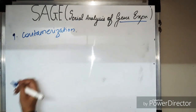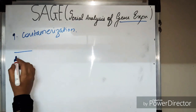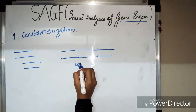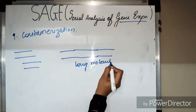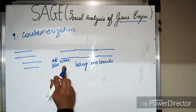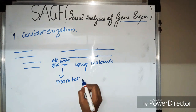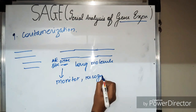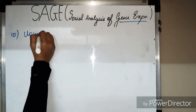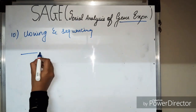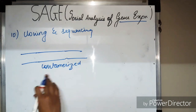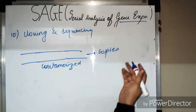In Step 9, there is concatemerization of the di-tags. The di-tags are combined into much longer molecules called concatemers. Each di-tag has an anchoring enzyme site, allowing scientists and computers to recognize where one di-tag ends and another begins.